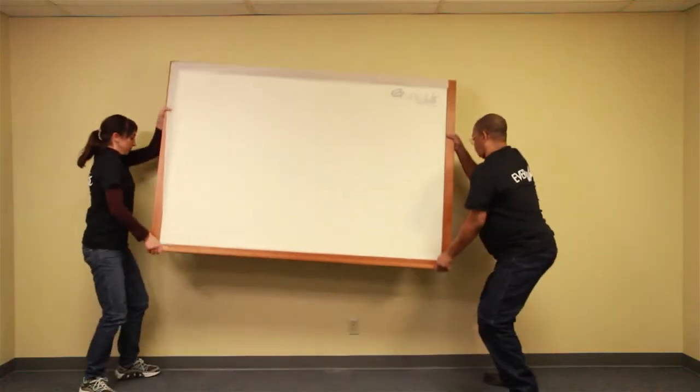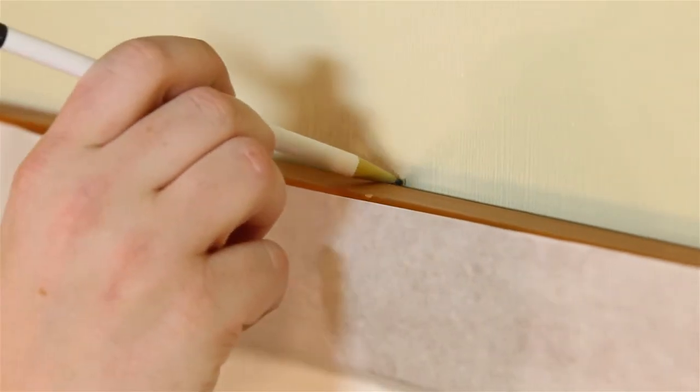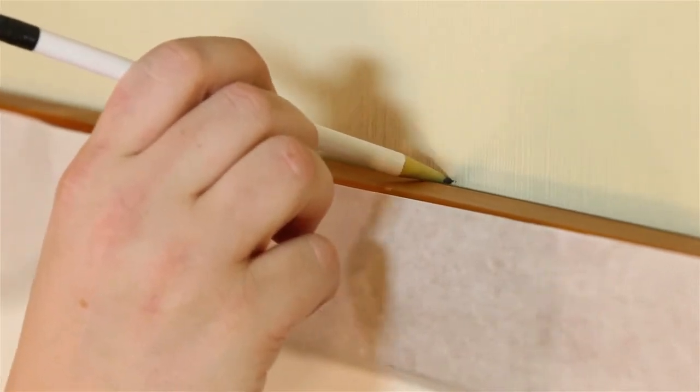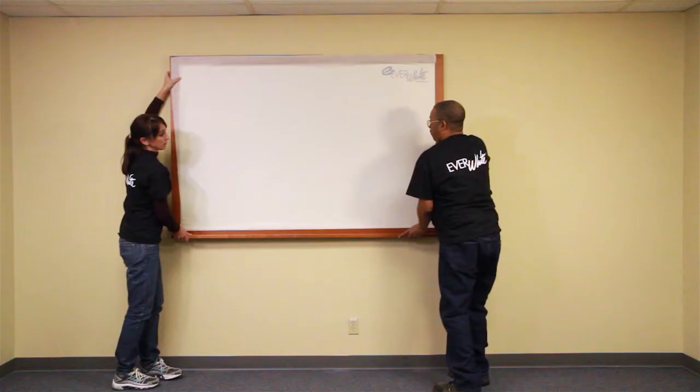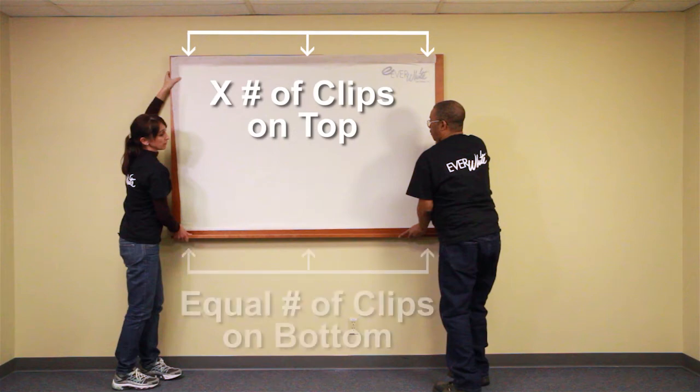Lift and place the board onto the bottom clips and mark the wall at the top of the board where you want your mounting clips located. The number of clips at the top should be the same as the number of clips at the bottom.